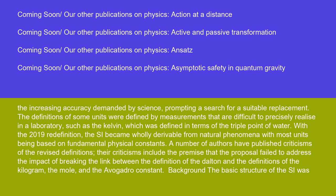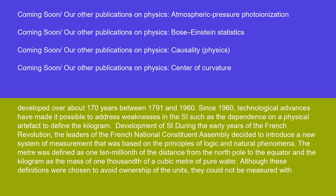The basic structure of the SI was developed over about 170 years between 1791 and 1960. Since 1960, technological advances have made it possible to address weaknesses in the SI, such as the dependence on a physical artifact to define the kilogram. During the early years of the French Revolution, the leaders of the French national constituent assembly decided to introduce a new system of measurement based on the principles of logic and natural phenomena.